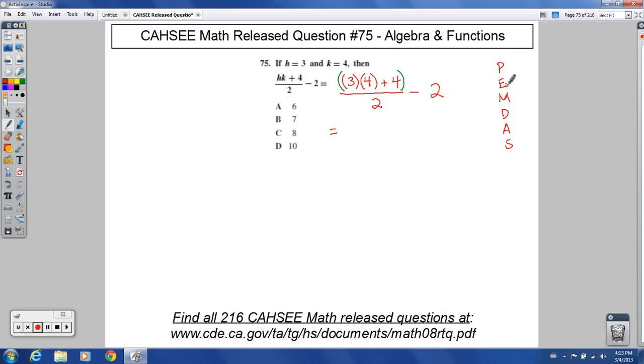We're going to do parentheses, then exponents, then multiplication and division. They go together. And addition and subtraction, they go together. So we're doing multiplication and division before we're doing addition and subtraction. So this is like step 1, 2, 3, and 4. These go together left to right, these go together left to right.